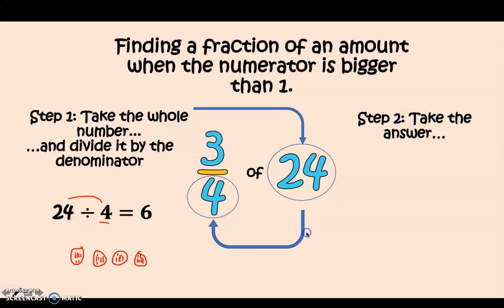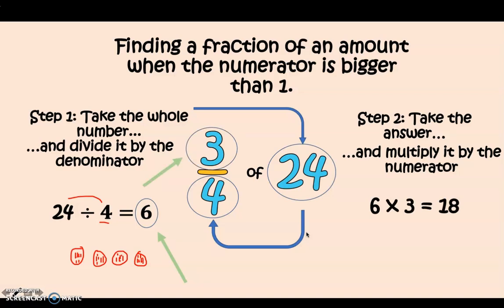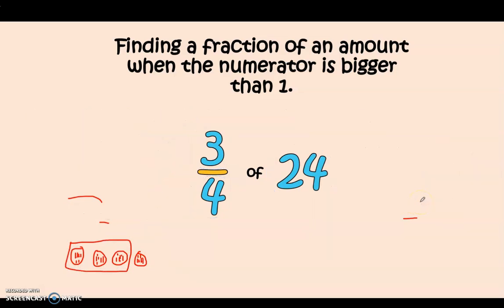So again I'm going to take that answer which in this case is my answer 6 and I'm going to multiply it by my numerator. Again it is 3. So now I've got 6 multiplied by 3 which equals 18. If again if I want to look at that over here Year 3 I could have a look at I've got how many groups of 6 I need. I need 3 groups of 6. Here I've got 4 groups of 6 so I could just look at these 3, count them all together and it would give me 18 again. So 3 quarters of 24 equals 18.